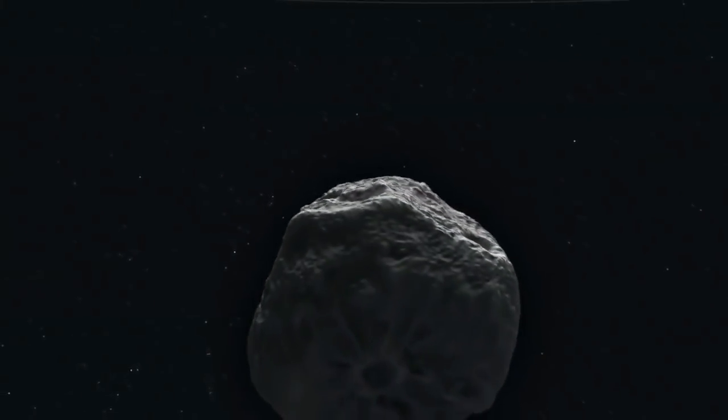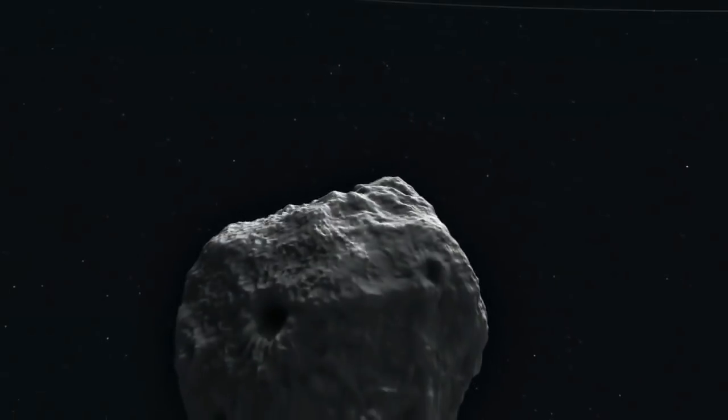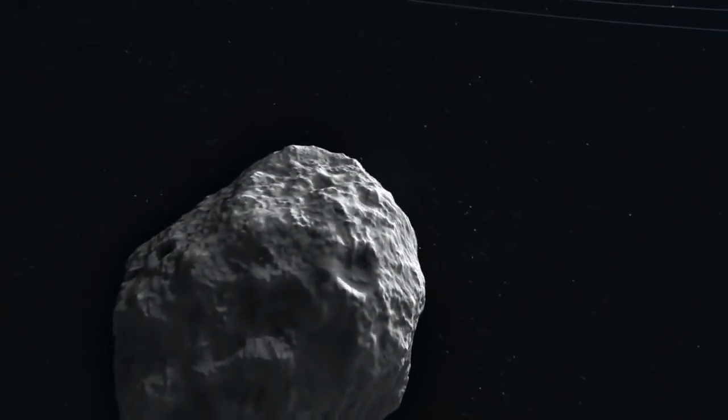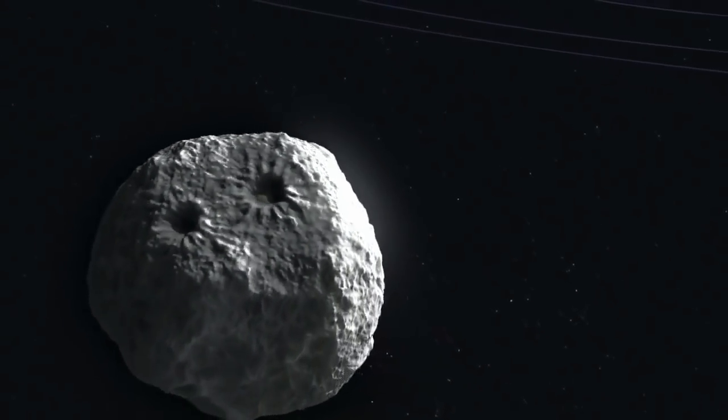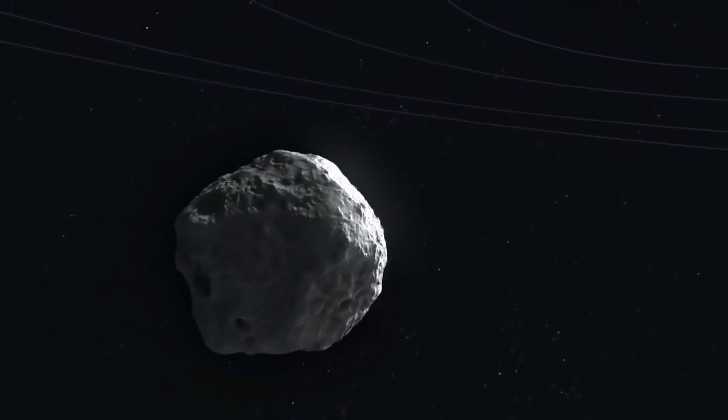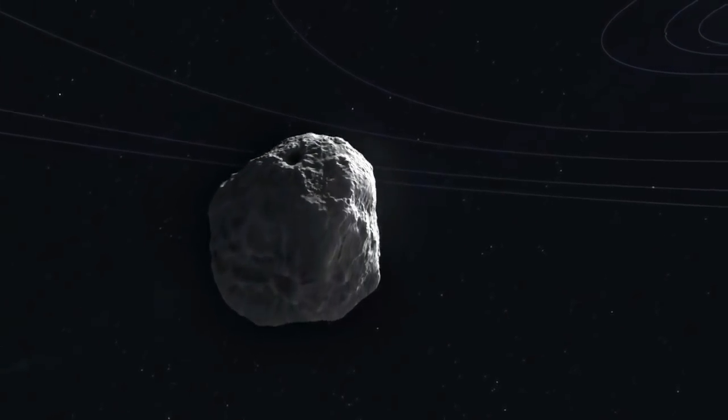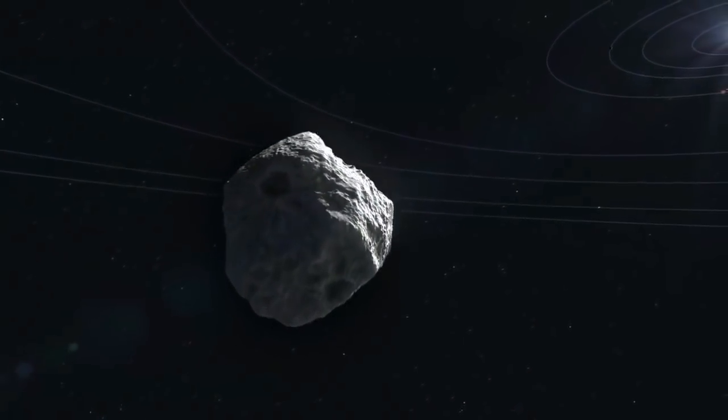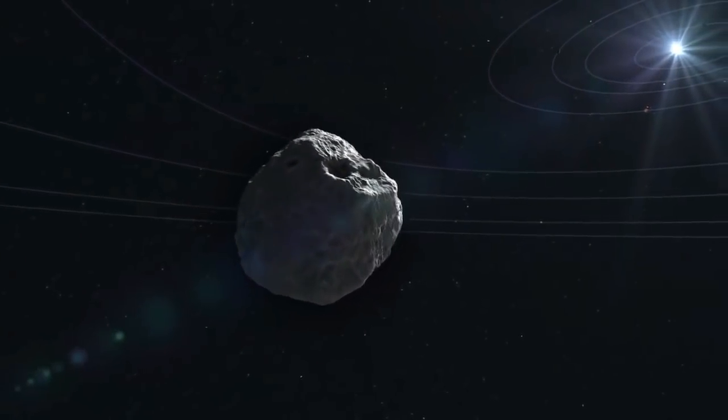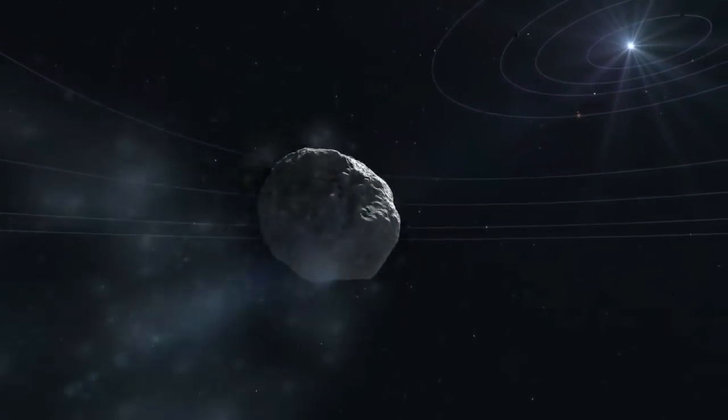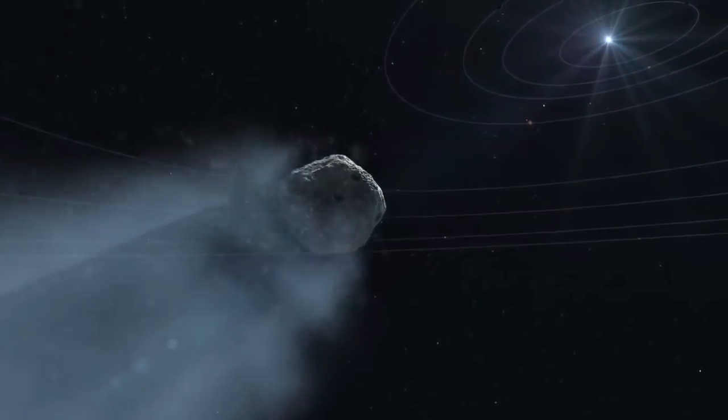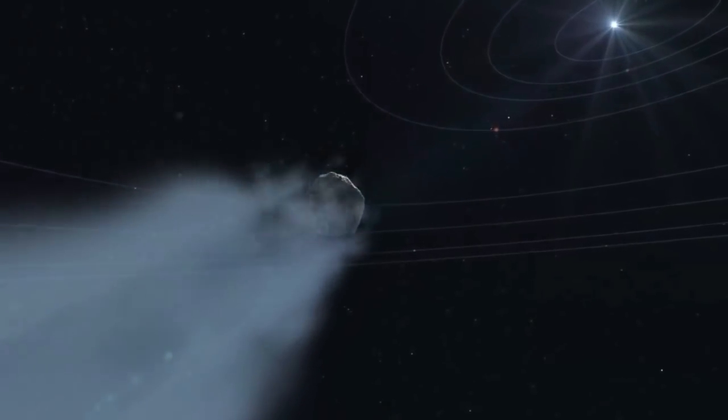To accomplish this, you would simply detonate the nuke on or near the asteroid. For an asteroid that is relatively solid, you don't necessarily need to completely destroy it, rather just nudge it in a different direction. In fact, you would want it to stay as intact as possible, rubble could be a bad thing. Rather you just want vaporized ejecta pushing the asteroid in a slightly different direction so it misses Earth.